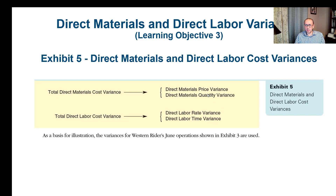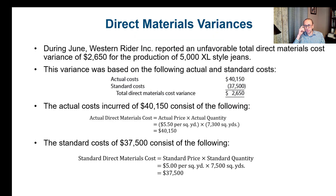Let's apply this split of variances to our example. During the month of June, Western Rider Incorporated reported an unfavorable total direct material cost variance of $2,650, based on actual production of 5,000 XL style jeans. The actual cost was $40,150 and the standard cost of material was $37,500, giving an unfavorable variance of $2,650 — a positive value indicating unfavorable.